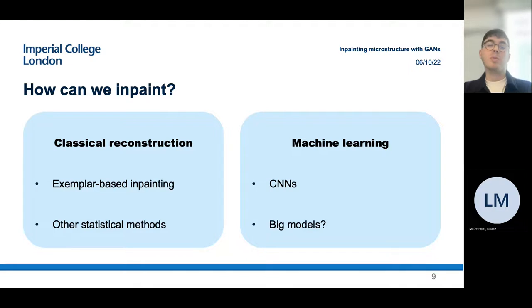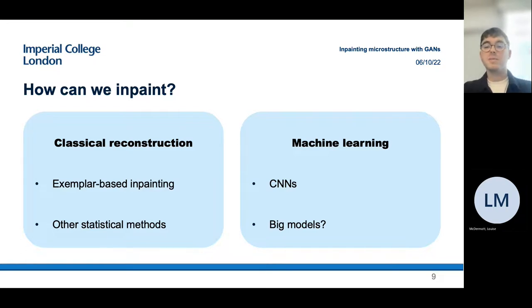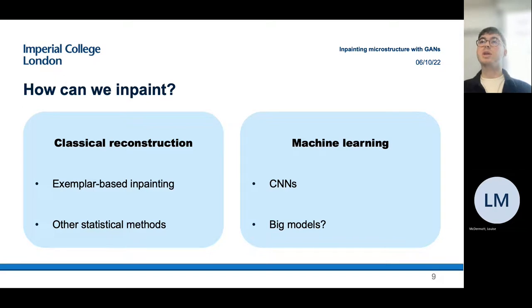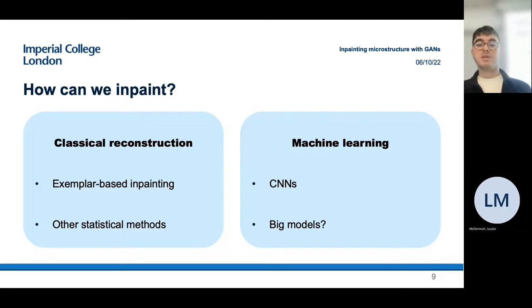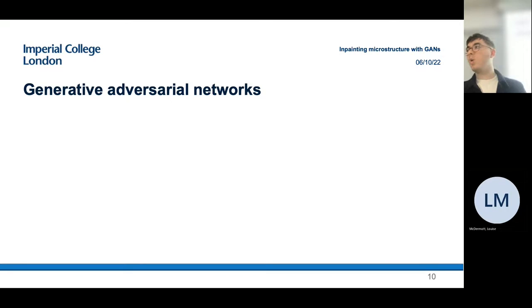More recently we've seen very large models emerge that are now widely used, the best example being Stable Diffusion, which is now used for text-to-image, video generation, and inpainting. However, for our very specific task of inpainting microstructure for materials applications, those bigger models aren't as strong because we have certain criteria to fulfill. We need to develop new models in order to constrain our inpainting method.